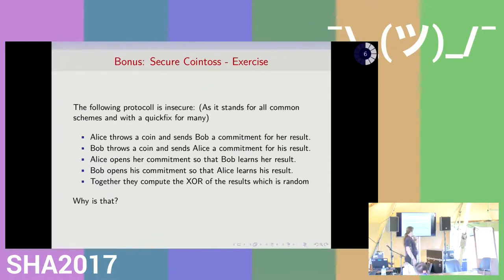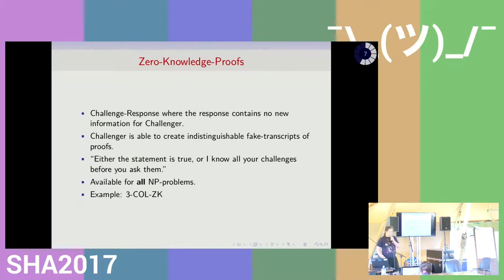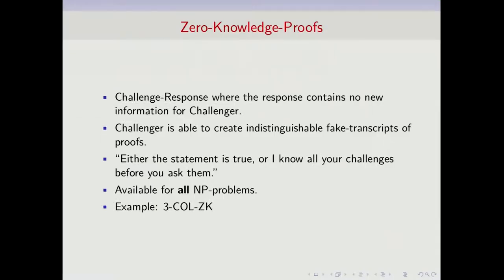A nice exercise is this slightly changed version of the protocol — this one is insecure. If you want to see why cryptography is very hard, try to figure out why it is insecure. You can ask questions about these things in the Q&A. I was already asked about an explanation for zero knowledge proofs, and I think we'll start with something that might make this a little bit easier to understand — I need a volunteer.